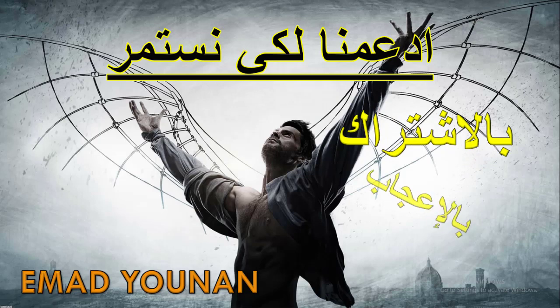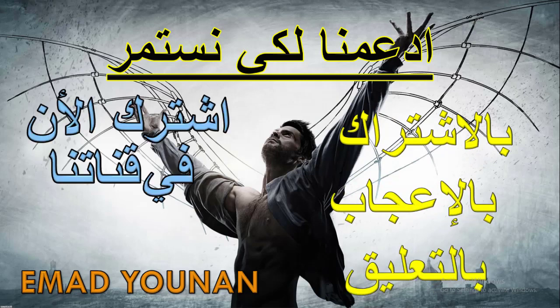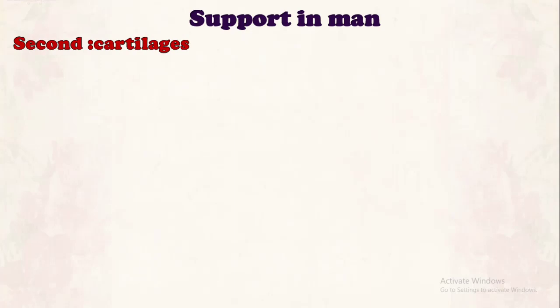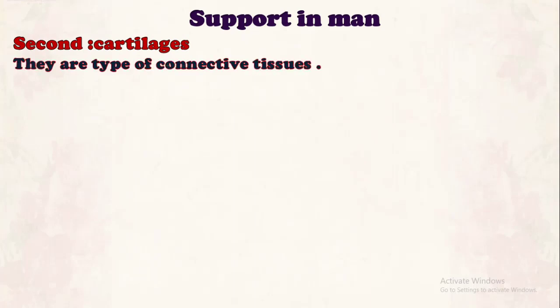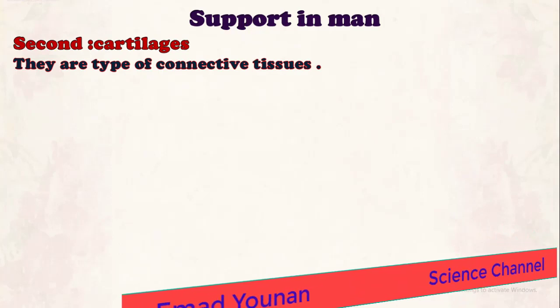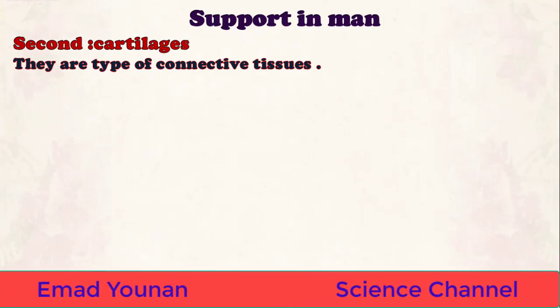Cartilage — what is meant by cartilage, and what is meant by joint? Support in men, second part: cartilage. Cartilage is a type of connective tissue. Connective tissue is a tissue that joins between the internal parts of the body, or it is a tissue that includes cells embedded in intercellular substance. This substance may be solid, fluid, or semi-solid.